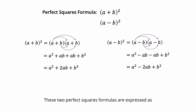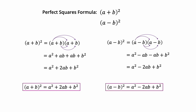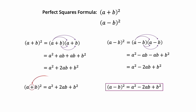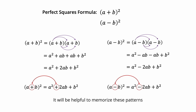These two perfect squares formulas are expressed as: (a plus b) squared equals a squared plus 2ab plus b squared, and (a minus b) squared equals a squared minus 2ab plus b squared. If the binomial is positive, the middle term of the trinomial is positive. If the binomial is negative, the middle term of the trinomial is negative. It will be helpful to memorize these patterns of perfect squares formulas.